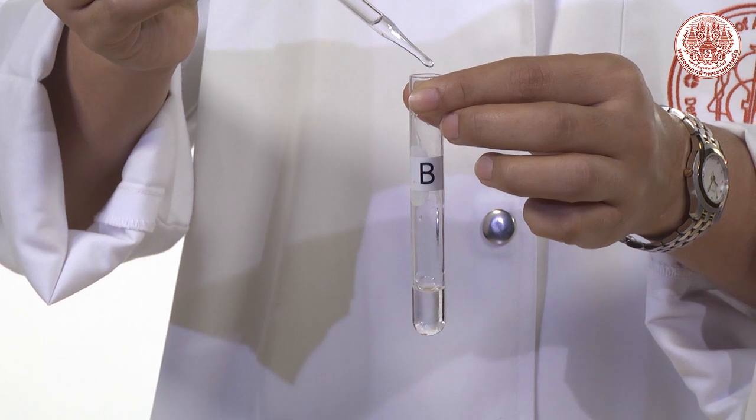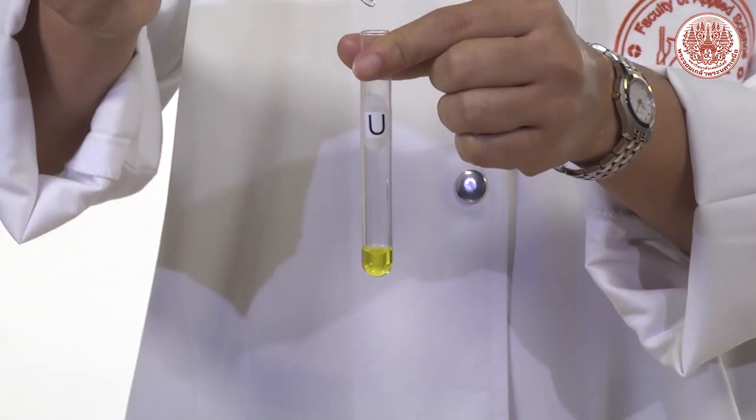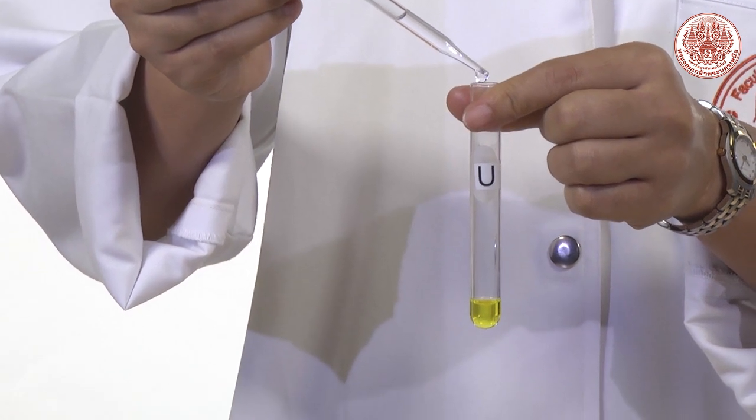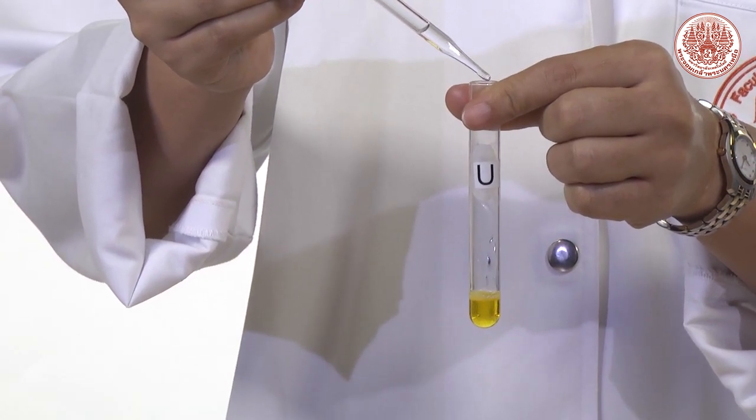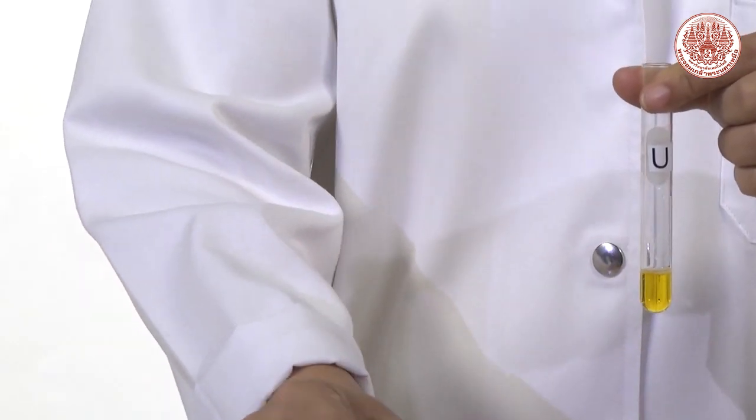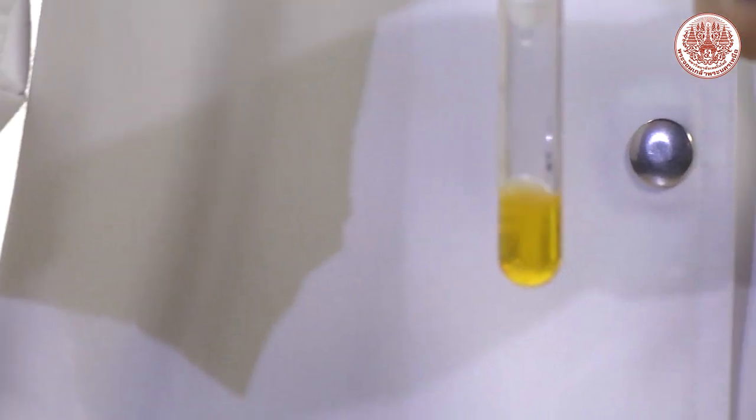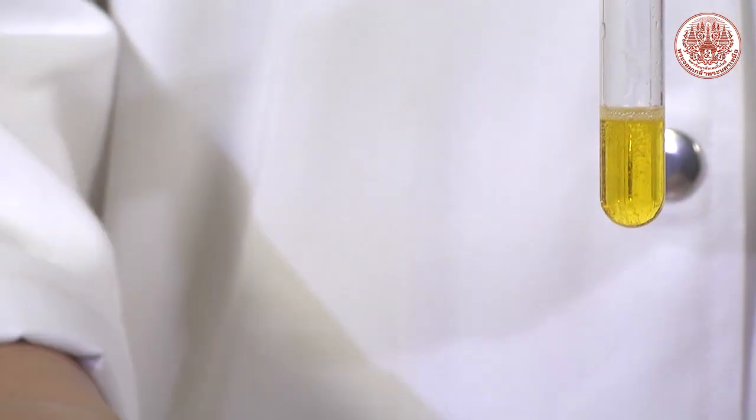If no bubble is formed in the U tube, meaning there are no carbonate ion in an unknown sample. Keep in mind, if students observe less bubbles than that in C tube, it also means that positive test occurs.